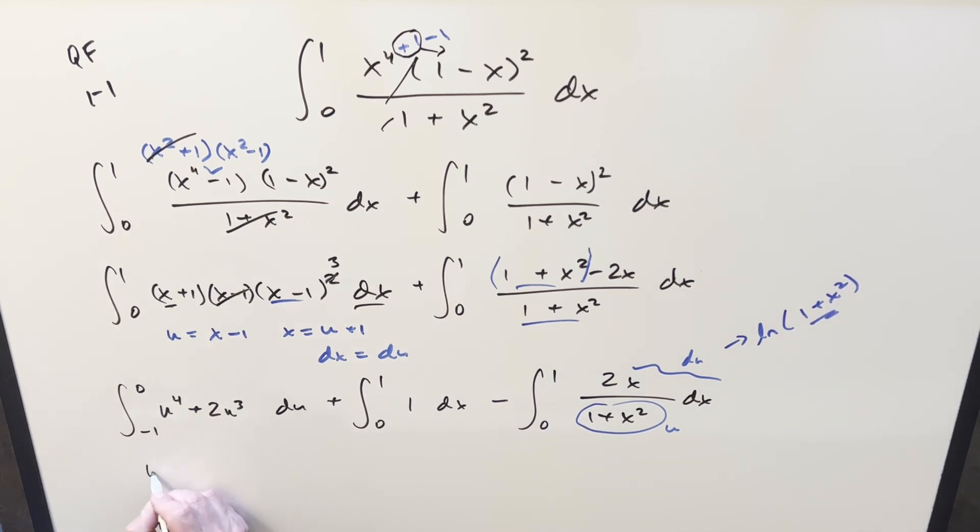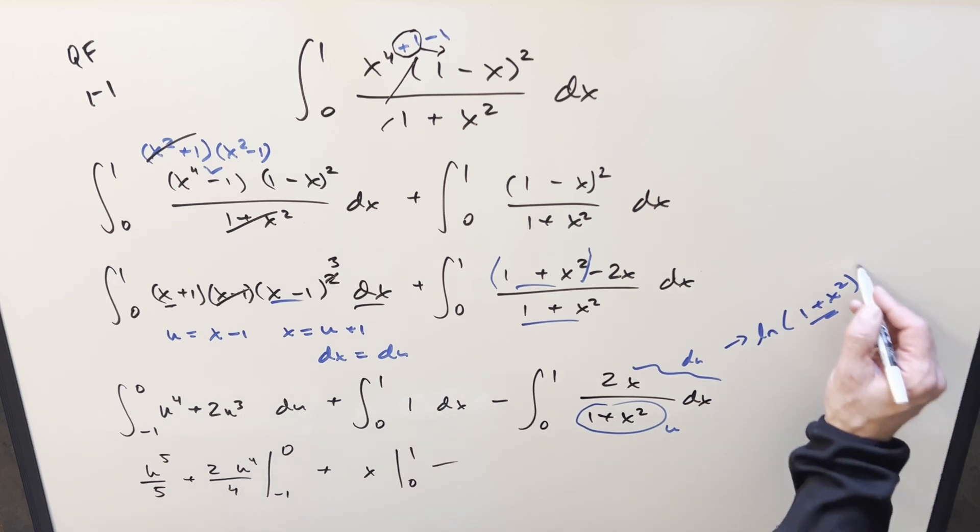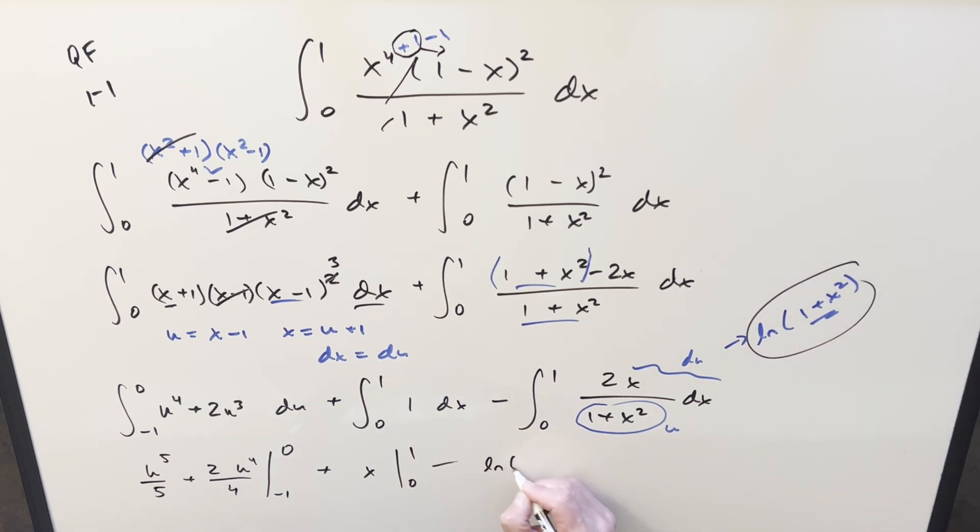So let's see if we can finish everything off here we have power rule so it's going to be u to the five over five this one's going to be two u to the four over four evaluated from minus one to zero integral of one is just x so we have plus x from zero to one and then here we're going to use this value natural log one plus x squared from zero to one.